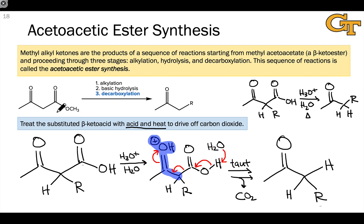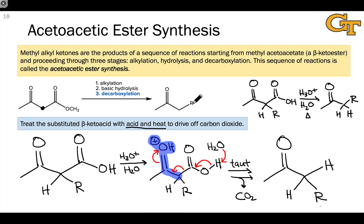And that's the acetoacetic ester synthesis. On the whole, we go from a starting acetoacetic ester — an ester with an acetyl group linked to its alpha carbon so there's a carbon between two carbonyl groups — to a substituted methyl ketone through three stages: alkylation of an enolate, followed by basic hydrolysis to convert the ester to a carboxylic acid, and finally decarboxylation using acid and heat to replace the CO2H group with an H, generating the final substituted product.